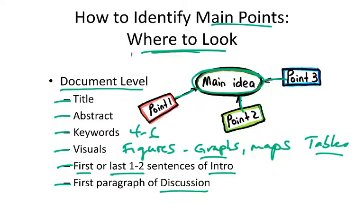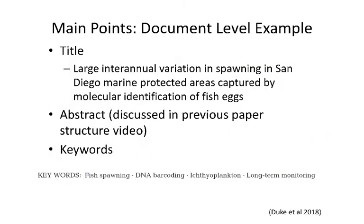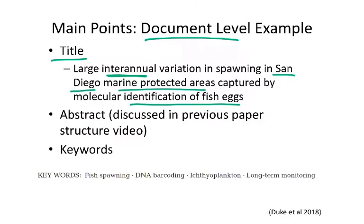The first document-level example is identifying key points that help determine the main idea. Going back to our fish egg example, if we look at the title of that paper — 'Large inter-annual variation in spawning in San Diego marine protected areas captured by molecular identification of fish eggs' — we already know it looks at several different years (inter-annual variation) and that they're identifying fish eggs in a particular region: San Diego marine protected areas. So from the title alone we can get the gist of the paper.